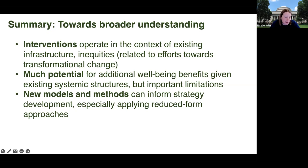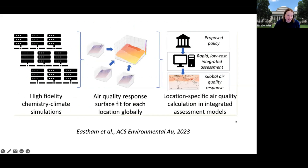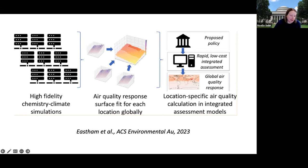There's much potential for using reduced-form approaches to better understand these systemic interactions. One recent paper led by Sebastian Eastham, a principal research scientist at MIT, looks at how we can use response surface fits of high-fidelity chemistry and climate simulations to embed very fast but location-specific air quality calculations that can be used in integrated assessment models. Given that the two papers I showed required a lot of computational time, the question is how do we move that to a space where we can explore different aspects of the system quickly and efficiently.